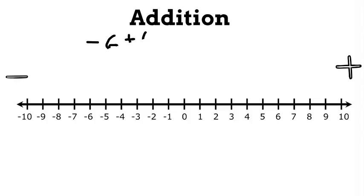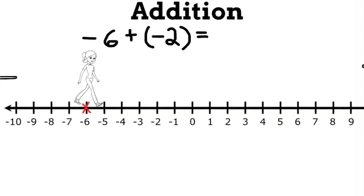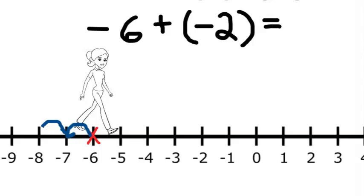Now, let's look at negative 6 plus negative 2. We're starting at negative 6. Since it's plus, we want to face the positive side. Then, since it's negative 2, we need to walk backwards two spaces. We end up at negative 8.